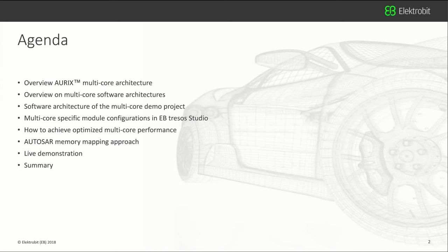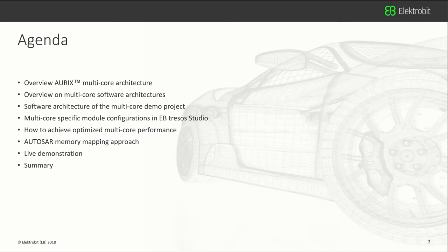Let's look at the agenda for our webinar. We'll start with the Aurix multi-core architecture, then give an overview of possible multi-core software architectures and the demo project software architecture. We'll cover AUTOSAR basic software modules and their configurations in a multi-core architecture, then outline performance aspects including core local memories available on the Aurix controller. We'll show the running demo on Aurix hardware and afterwards summarize and answer questions.